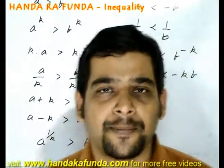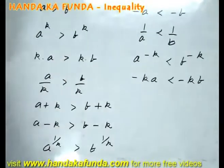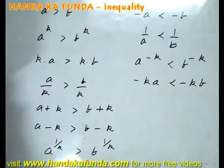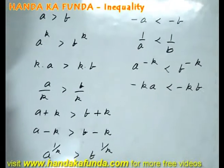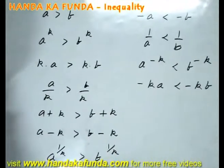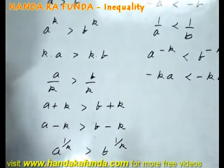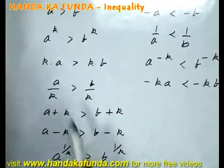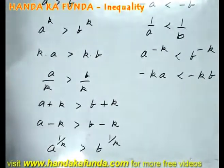Let us take a few examples. Suppose I am given that a is greater than b. The variables used in all these examples are just a, b, and k, considering that all three of them are positive values. If I am given that a is greater than b, then if I raise it to any positive power on both sides, the sign of inequality does not change.